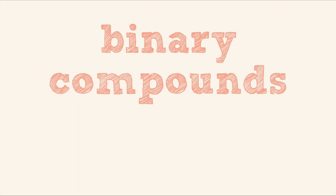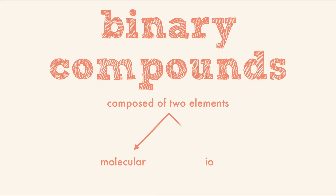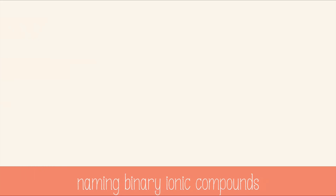Remember that a binary compound is composed of two elements, and it can be either molecular or ionic. We've named binary molecules in another video, and now we'll learn to name binary ionic compounds. Any binary ionic compound starts with the name of the cation first, then it's followed by the name of the anion.